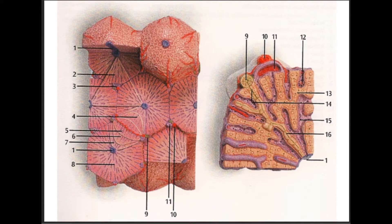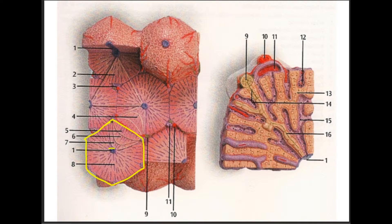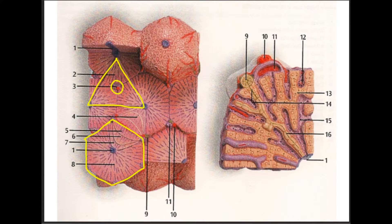Number eight is the classic liver lobule. Notice the hexagon shape drawn here — this is your classic liver lobule, and it is centered around a central vein. That's what distinguishes it from the portal liver lobule, which is centered around the portal triad.